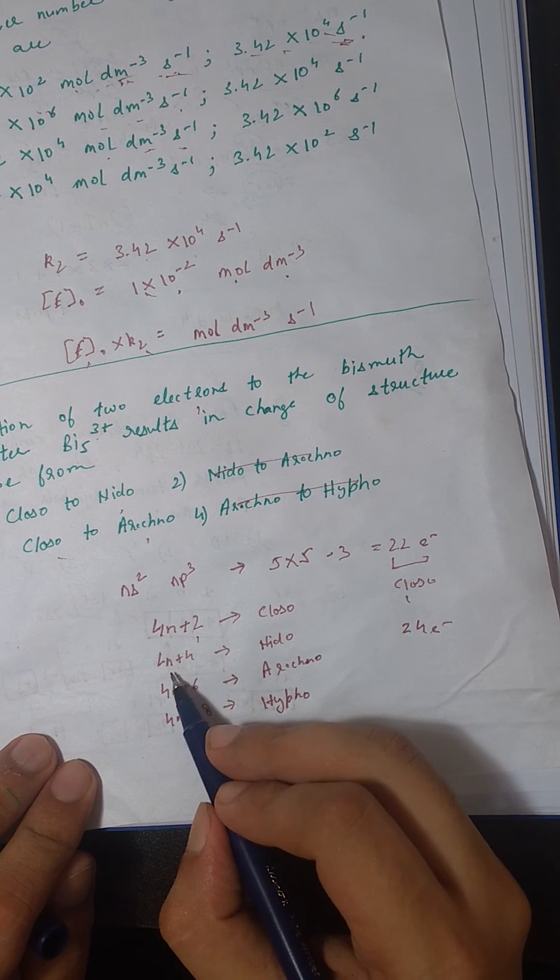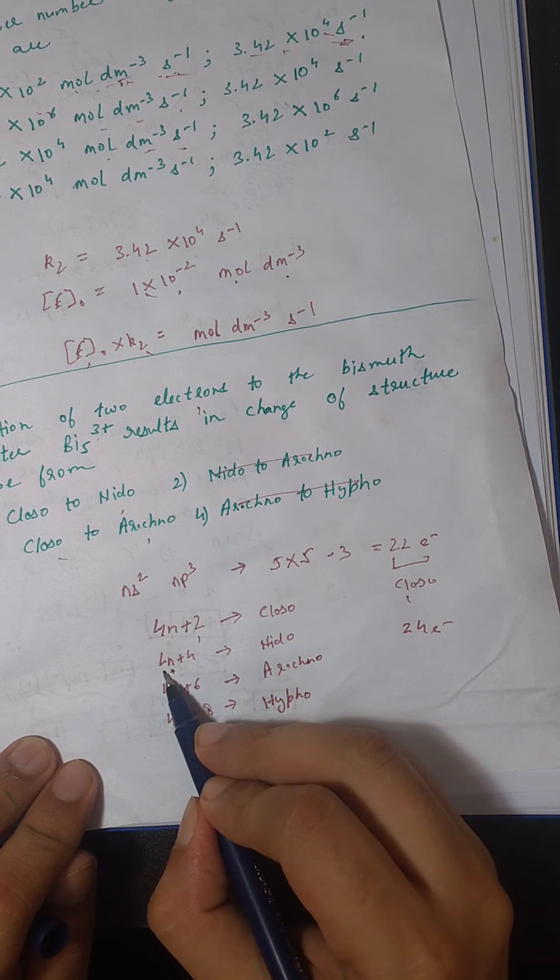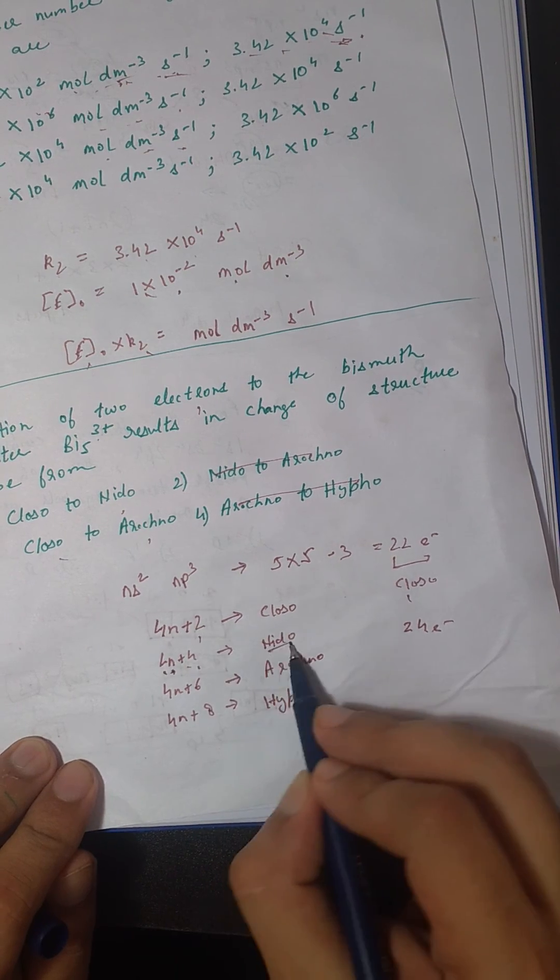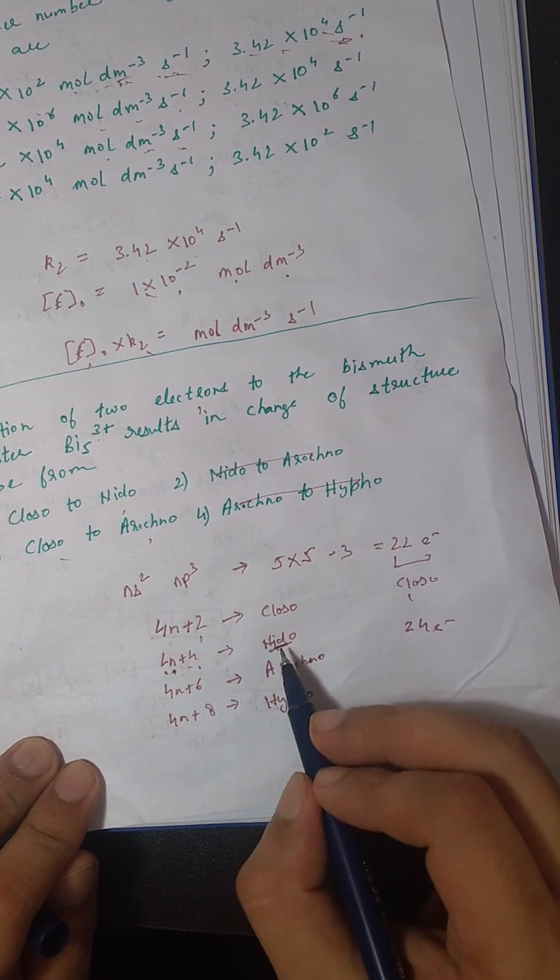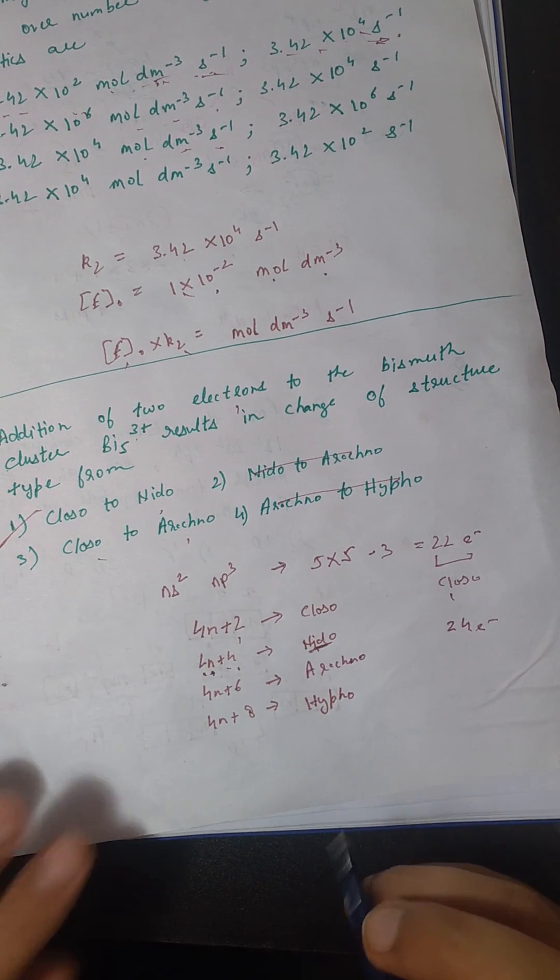If we put n equal to 5 in nido, we get 4n is 20 plus 4 equals 24, which is nido. So the correct answer is from closo to nido.